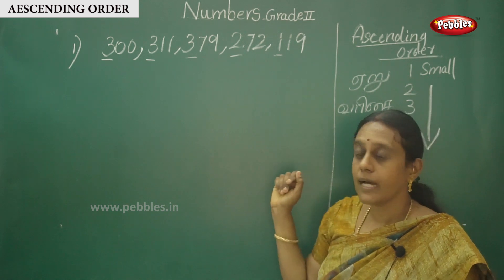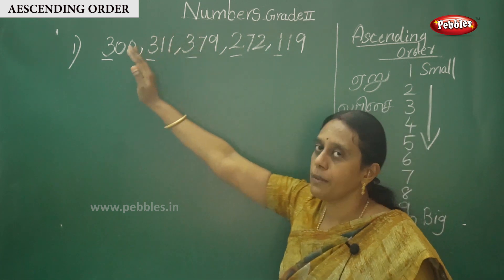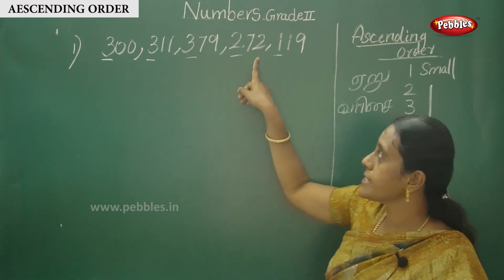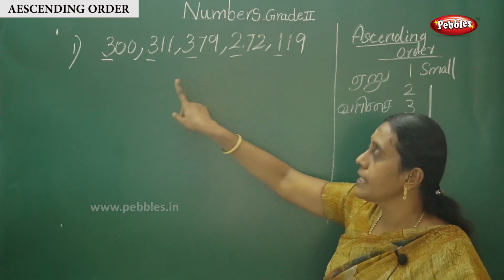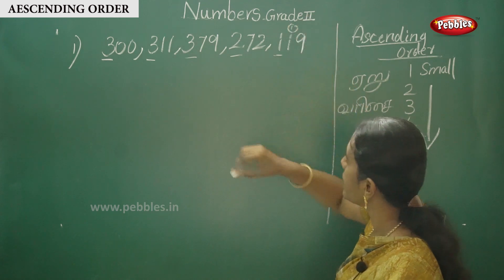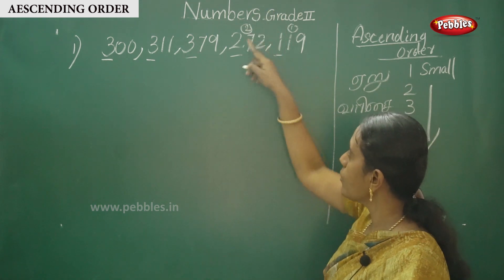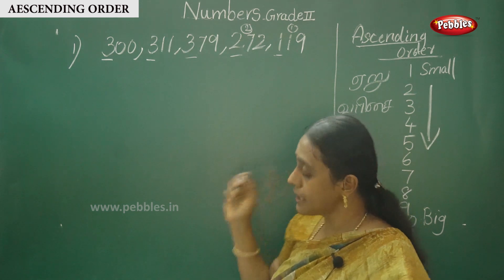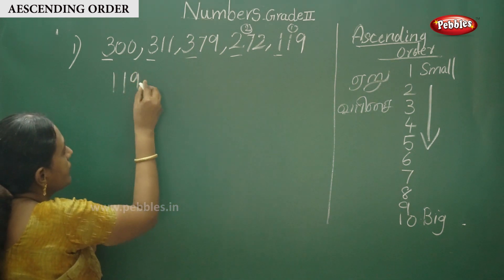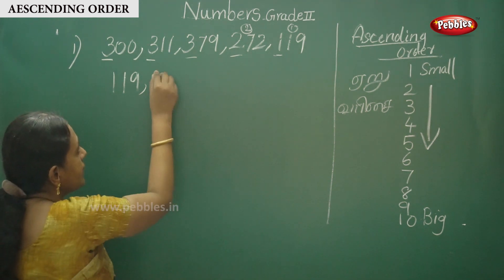Next, what do we write? 200 — there is one number: 272. So the second number we write is 272. After writing this number, you have to strike it out because you may get confused. Remaining are 3 numbers. Among these three, all have 3 in the hundreds place — same hundreds. Then check the tens place: 0-tens, 1-tens, 7-tens.